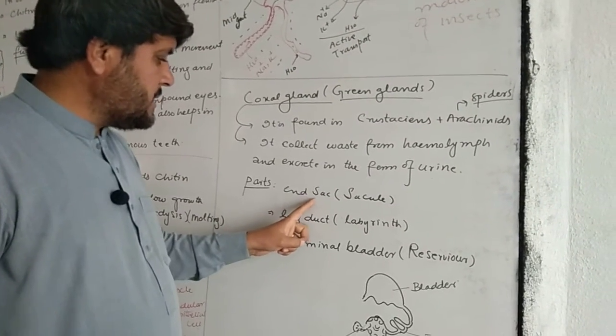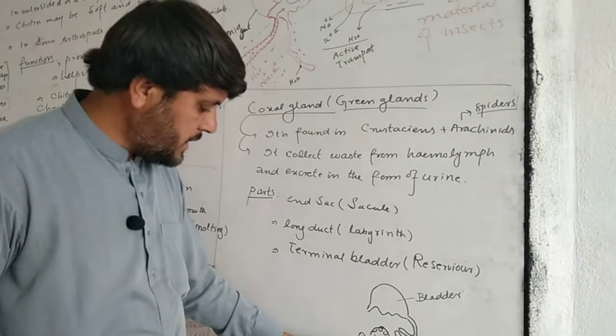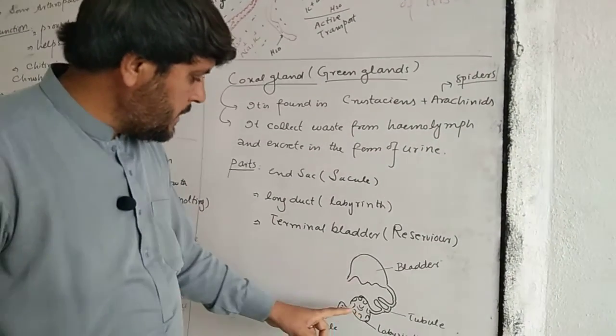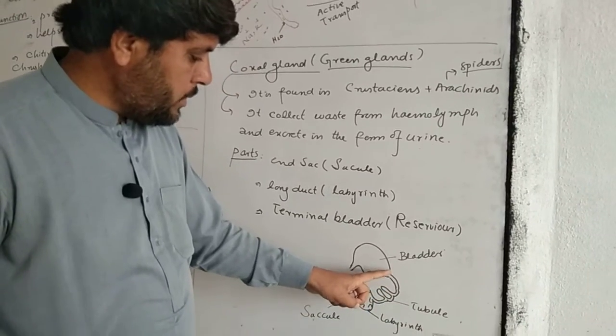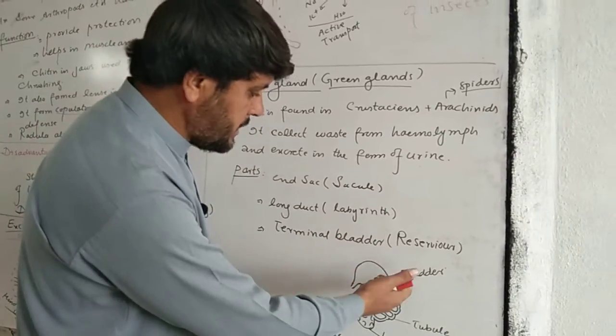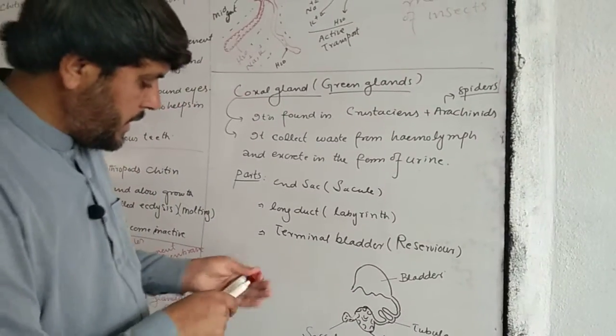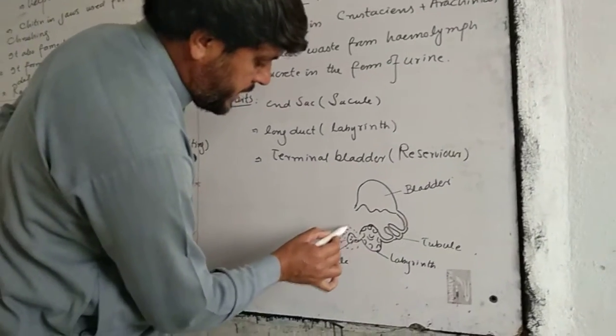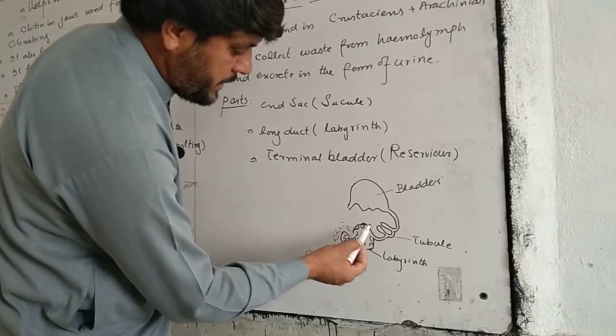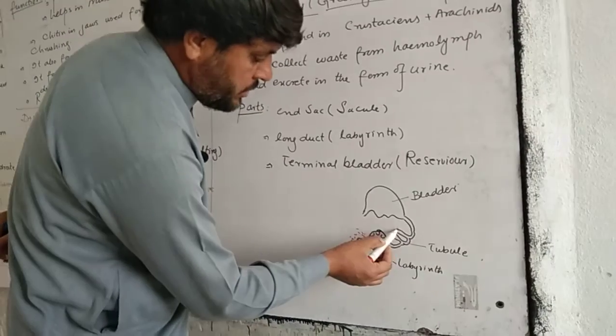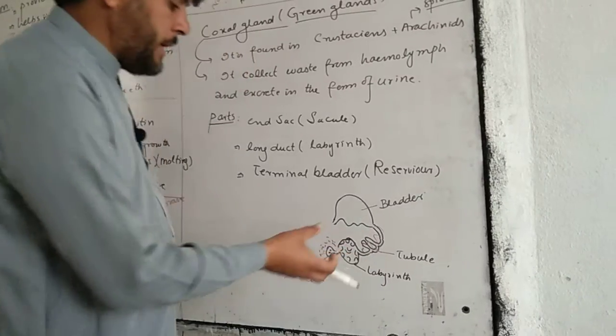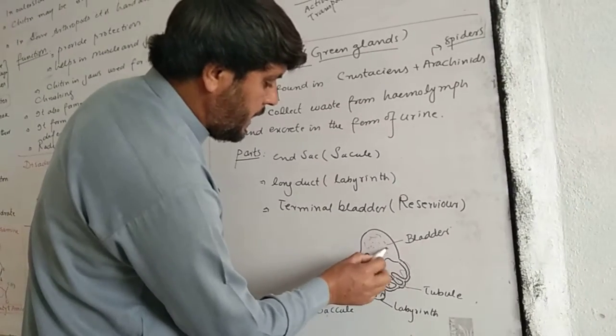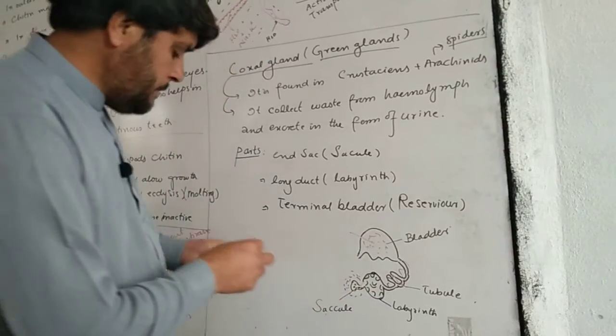The coaxial gland has different parts: a sac, labyrinth, long ducts, tubules, bladder, and reservoir. Materials are collected including different ions and glucose through a blood capillary network. By active transport, useful materials are absorbed from the fluid while waste material is removed.